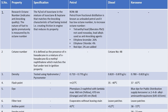The dyes used: phenyl-azo-2-naphthol with lambda max 460 nm for yellow petrol, 470 nm for orange petrol, and 505 nm for red petrol. For the blue dye of PDS kerosene, 1,4-dialkylamino-anthraquinone is used with lambda max in the range 645–655 nm.